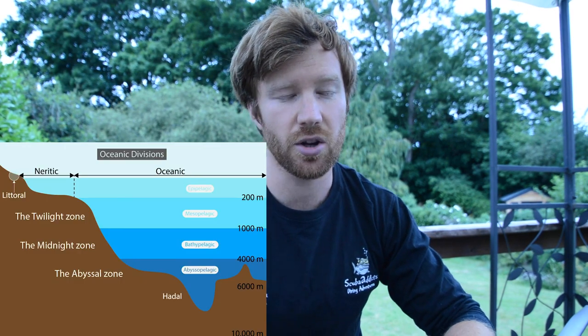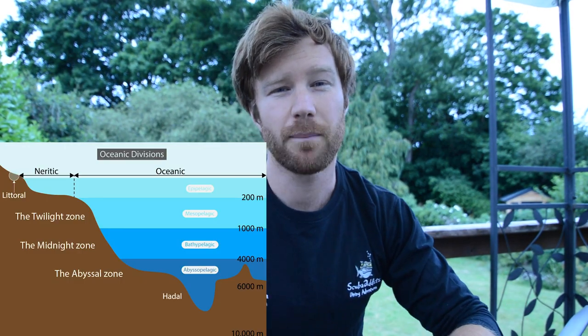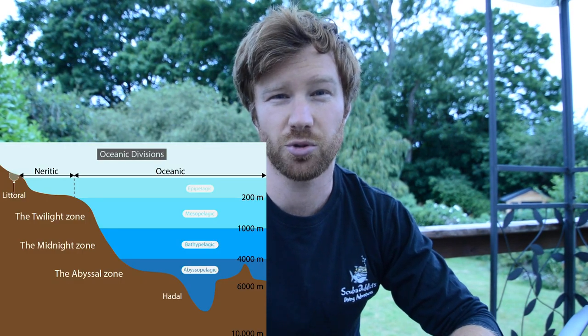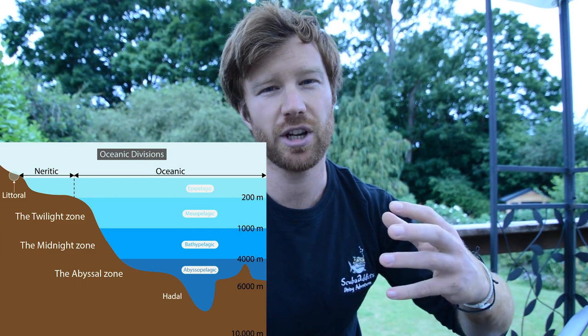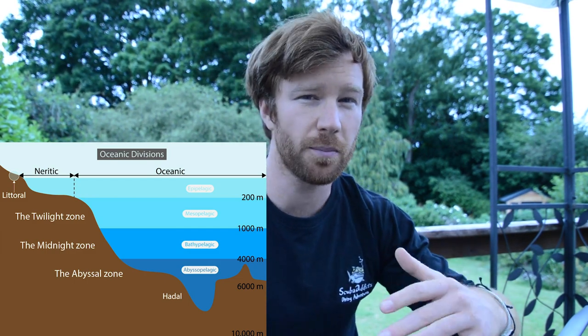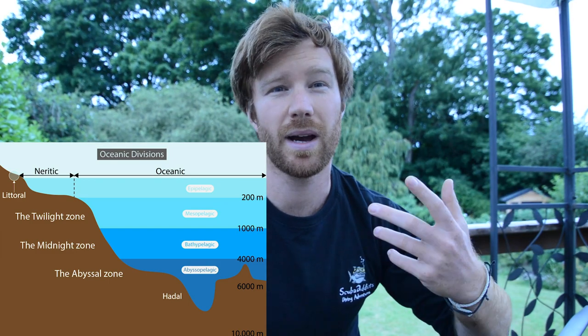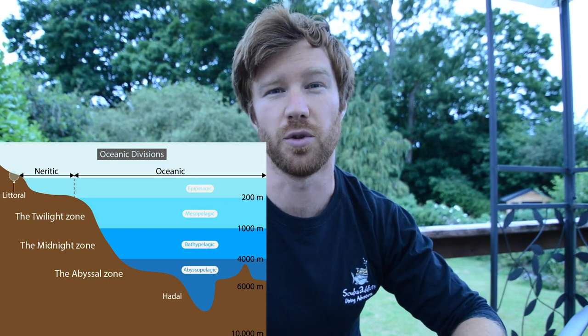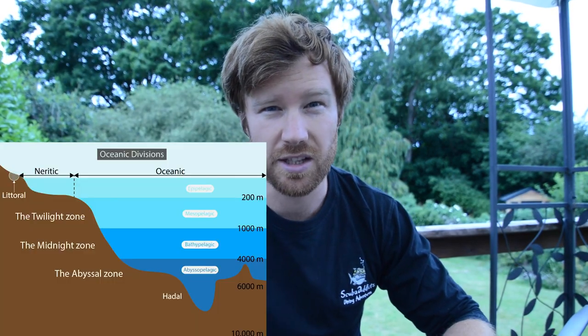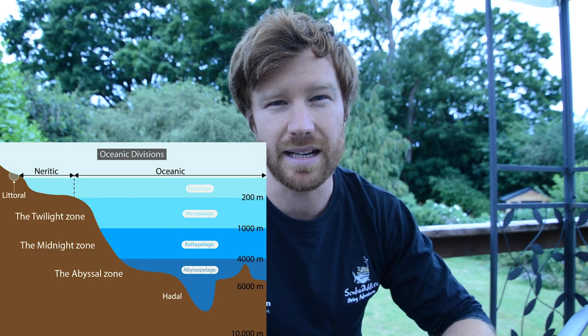Moving out to the Oceanic Zone, which is everywhere past the continental shelf — water deeper than 200 meters — oceanic sharks tend to live in that top 200 meters near the sunlight where there is a lot more food available. Sharks that live in the Oceanic Zone include the aptly named Oceanic Whitetip Shark and the Blue Shark.